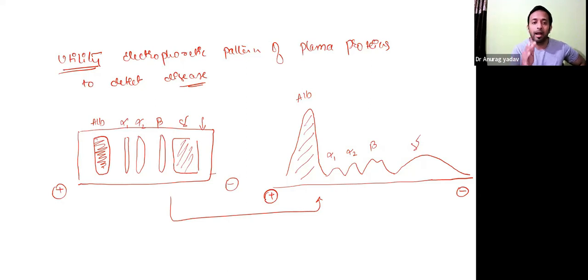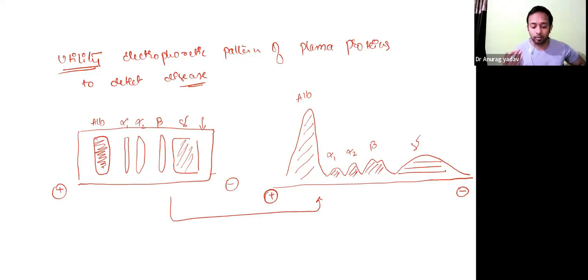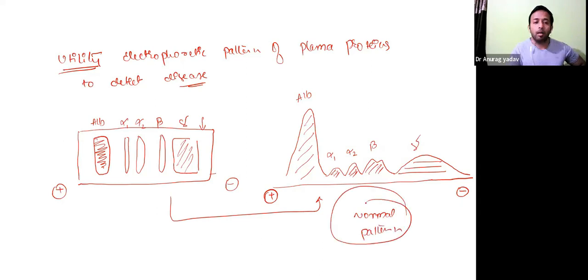So what we have done is converted the band form — the thickness of the color on the sheet — into a graphical representation of protein called an electrophotogram. The area under the curve tells you the concentration of each protein: if the area is small, concentration is reduced; if large, concentration is high. This is the normal pattern of the electrophotogram.